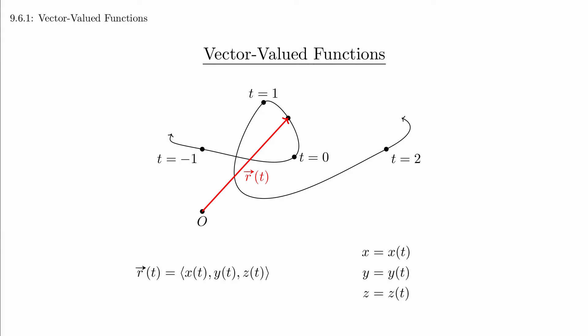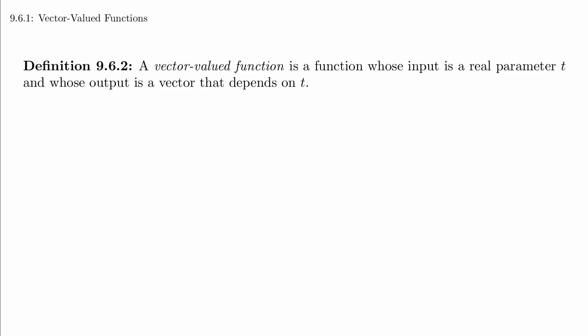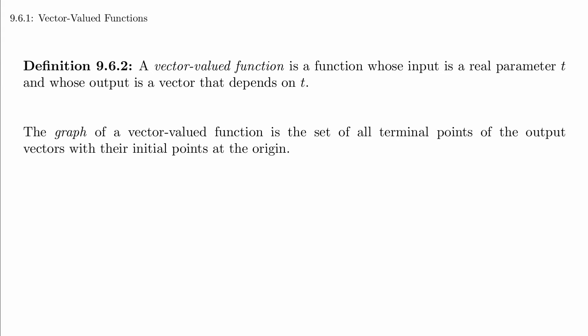Here are the formal definitions for these ideas. A vector-valued function is a function whose input is a real parameter t, and whose output is a vector that depends on t. The graph of a vector-valued function is the set of all terminal points of the output vectors with their initial points at the origin.